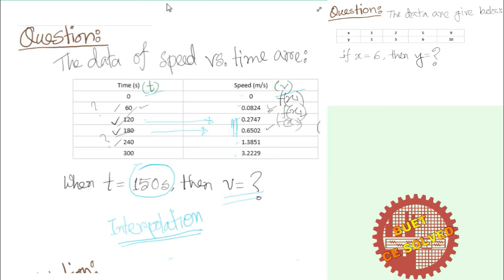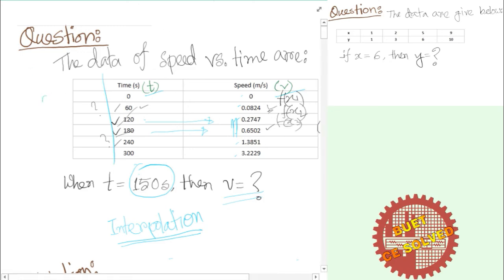In summary, the Lagrange interpolation method works whether the data is equally or unequally spaced. It is comprehensive and can interpolate any data regardless of spacing. The technique is easy to apply even for higher-order data. This concludes the Lagrange interpolation example. Thank you.